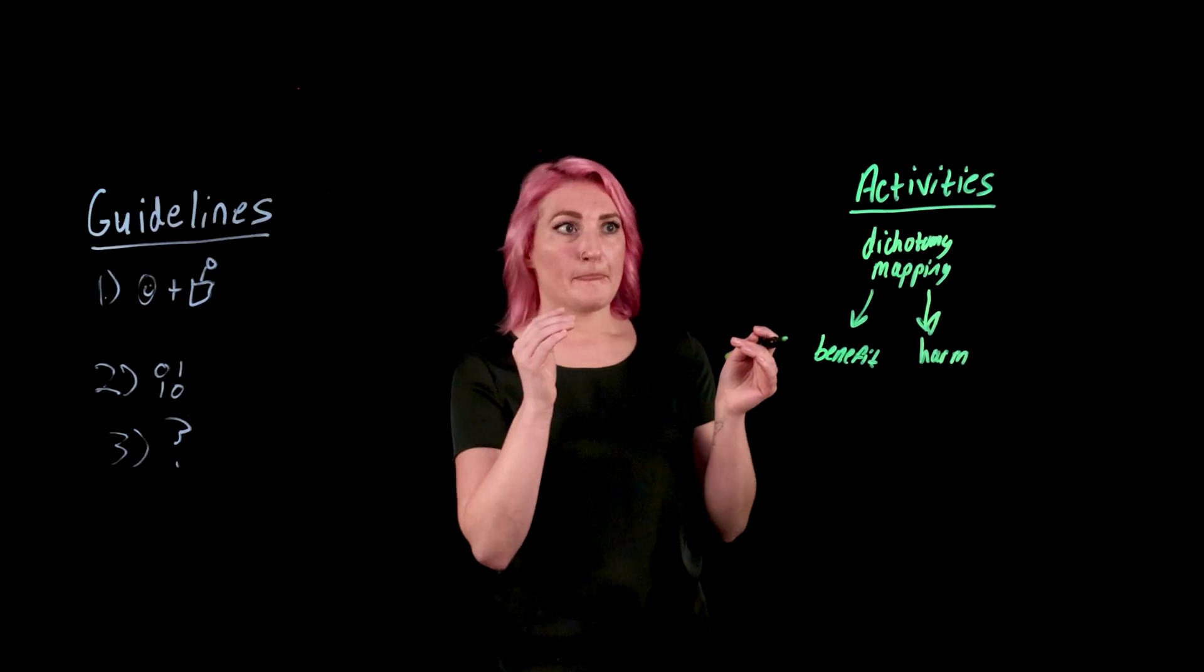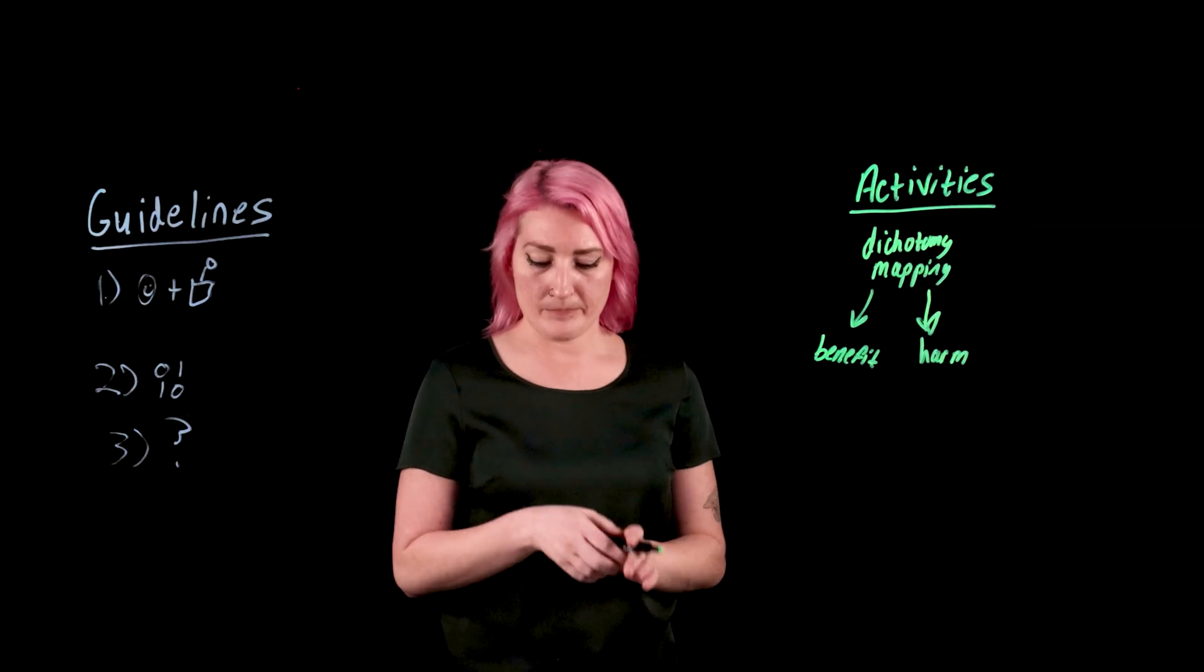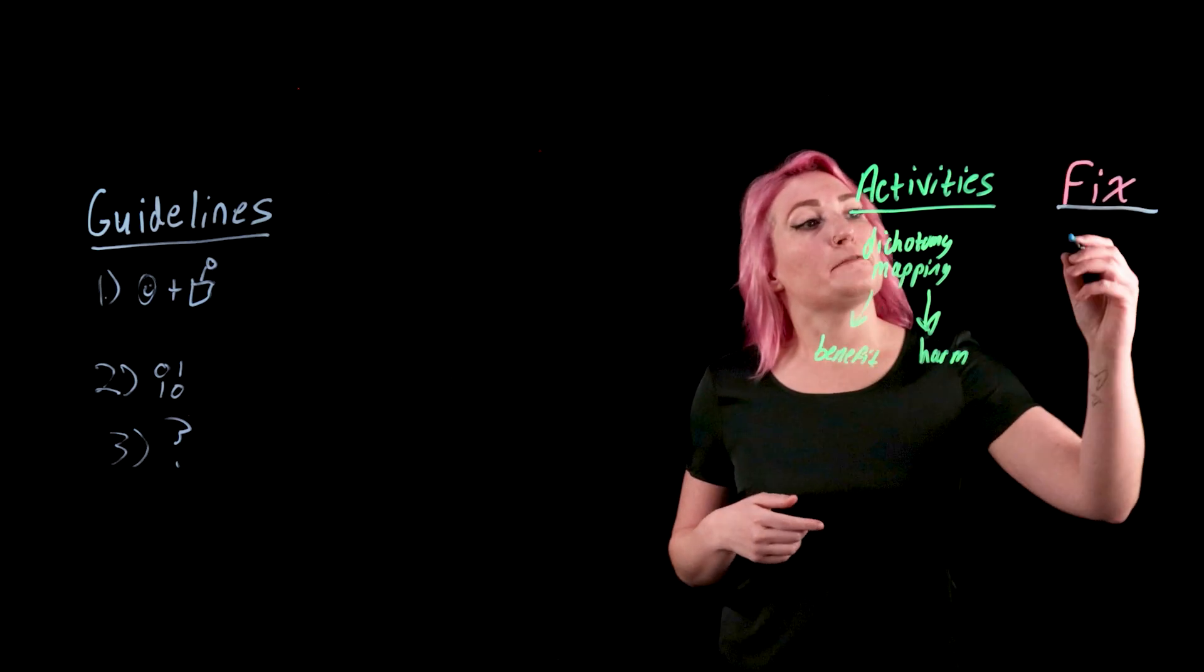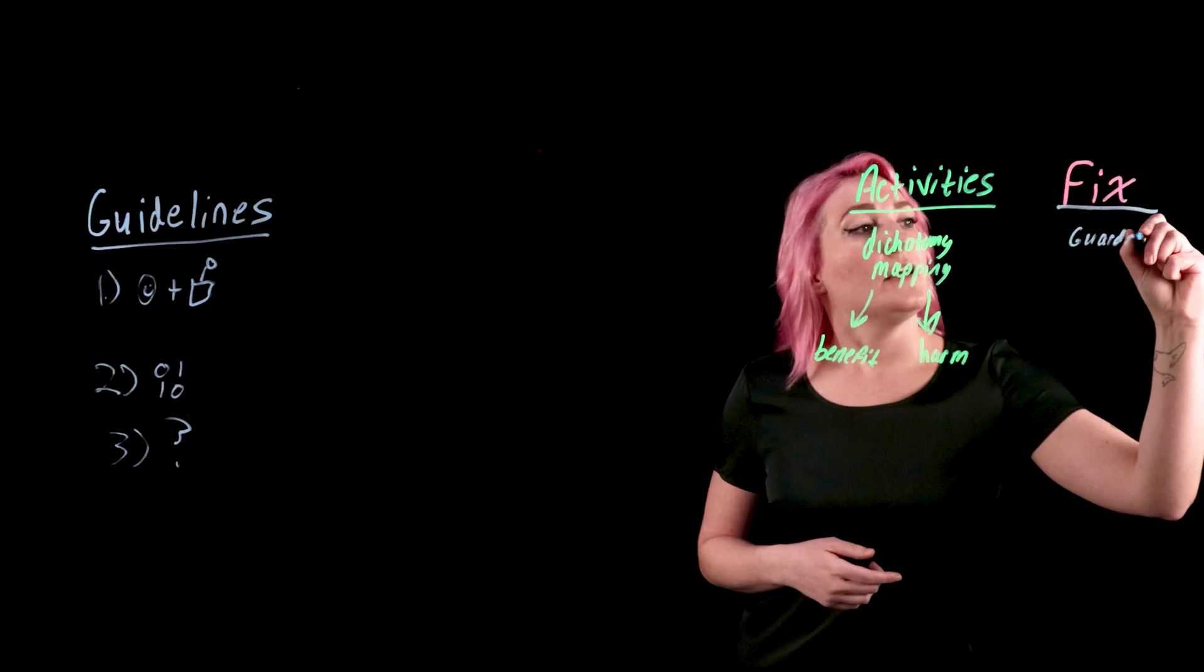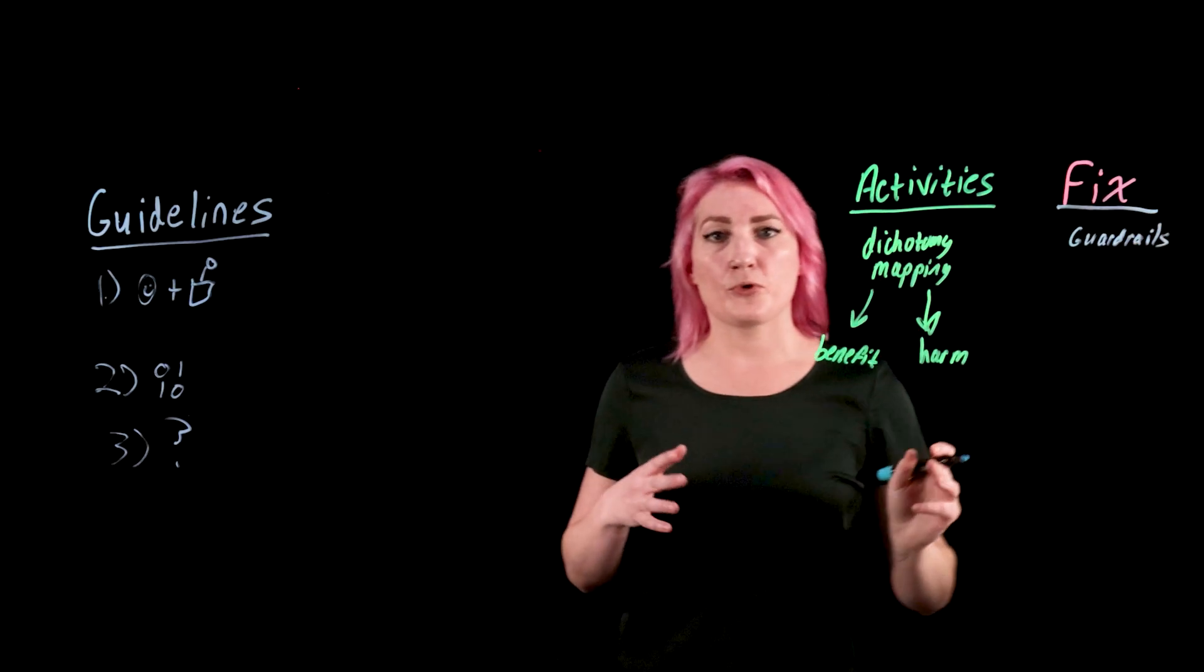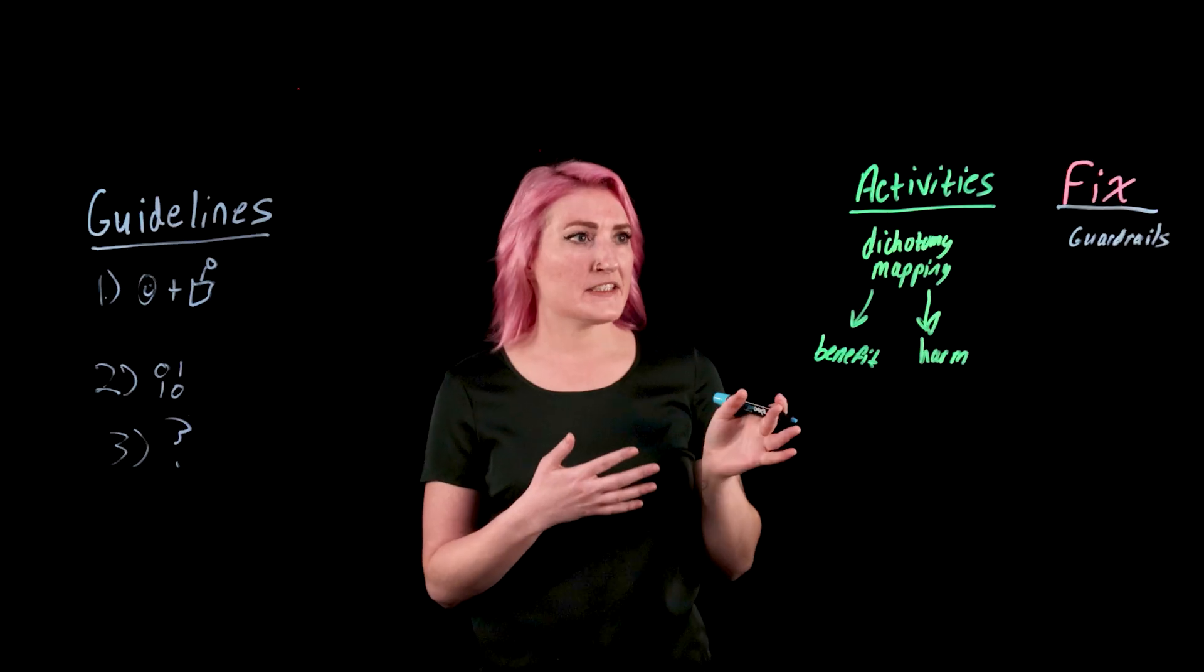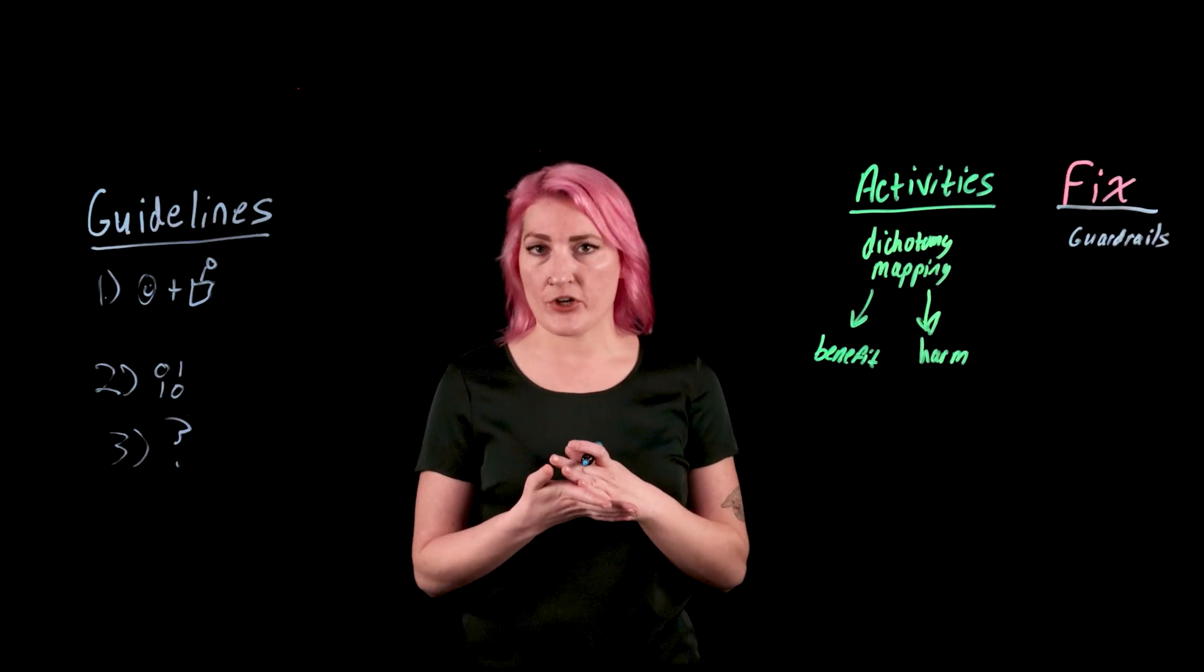Once we've got our rules, we've got our activities, we've defined some issues that maybe we need to work on, what do we do next? We fix it. The first thing we're going to do is implement a set of guardrails. And these are basically just rules that your AI system has to follow. In this case, it's going to be, we do not sell to advertisers. That is a guardrail.